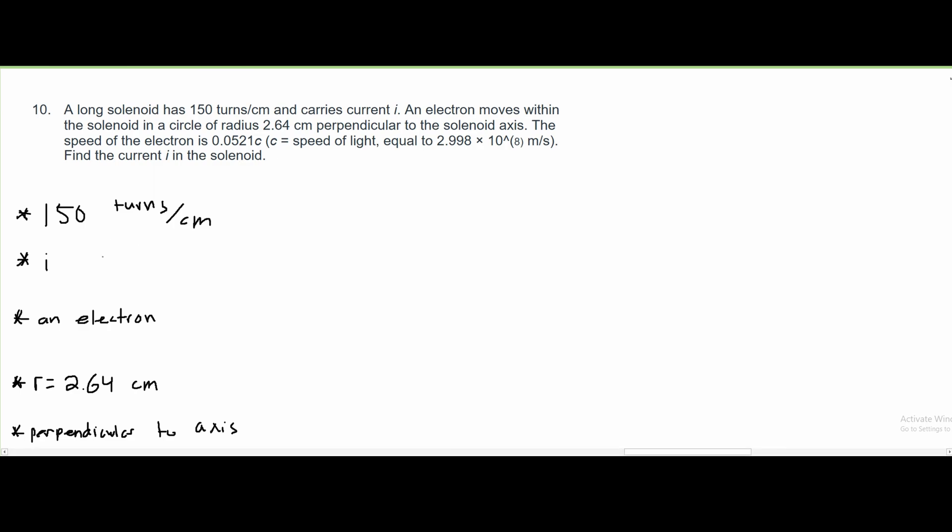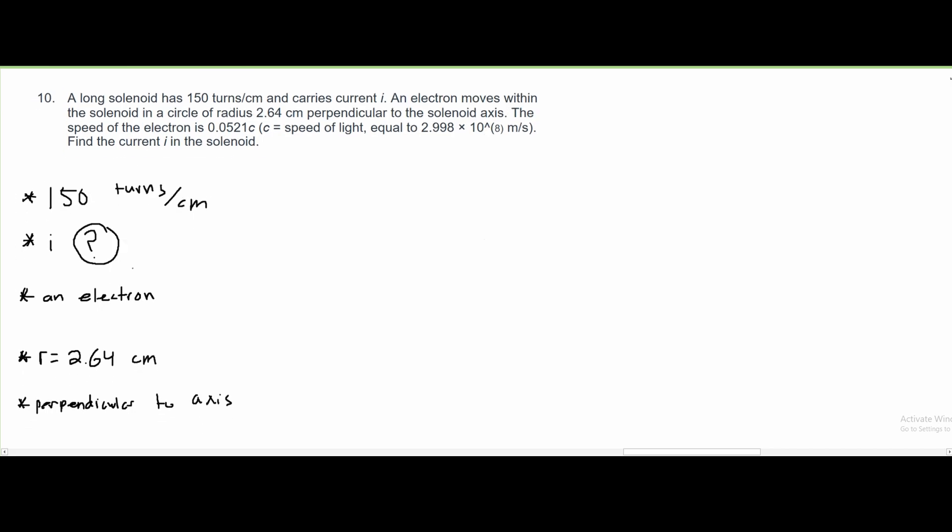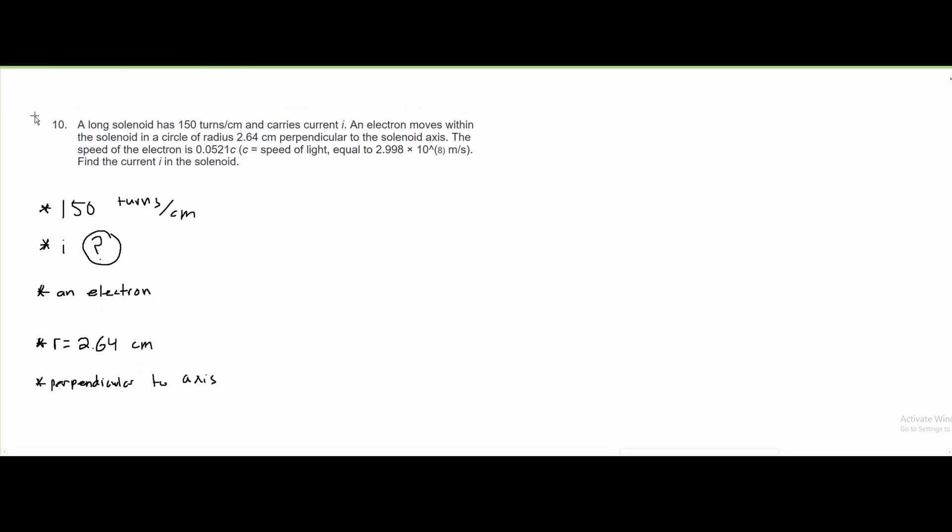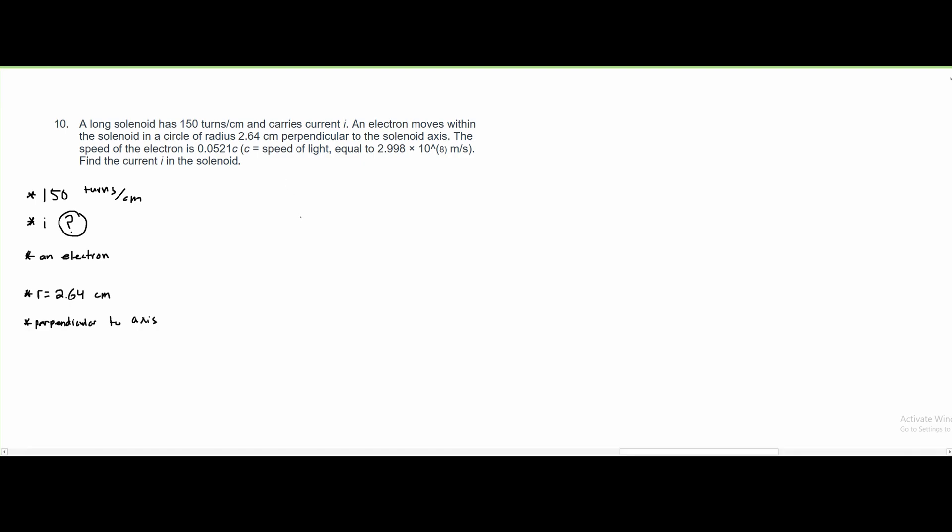We are asked to find the current of our solenoid. To do this, we should first write down all of the values that we're given, and then we can quickly sketch a circle that will represent our solenoid. We have our solenoid here, we have the middle axis here, and we are going to have the radius like this.